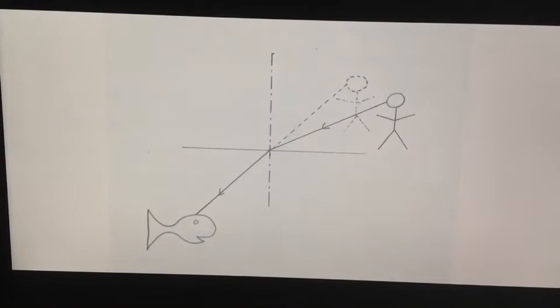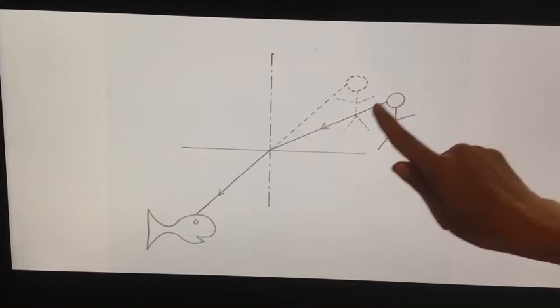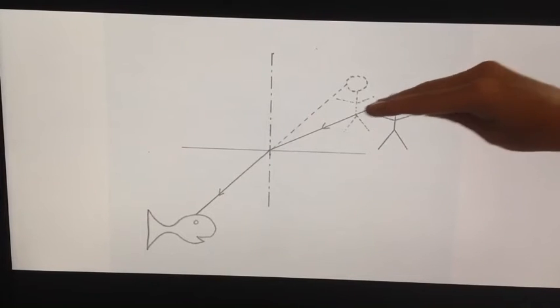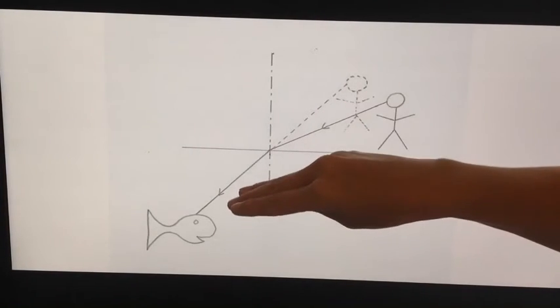What about the other way round then? And how the fish sees us. Here we've got a refraction of light as it's moving from air into the water. This time we've got the light travelling fast and then slowing down.